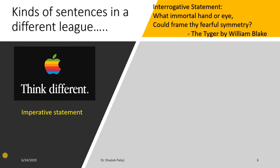Then there is a poem by William Blake, 'The Tyger': 'What immortal hand or eye could frame thy fearful symmetry?' There is a question mark, and the whole poem is written in an interrogative form. If you read the poem you will realize the poet has used only interrogative statements with figures of speech, and that has made the poem so beautiful and emphatic in nature.